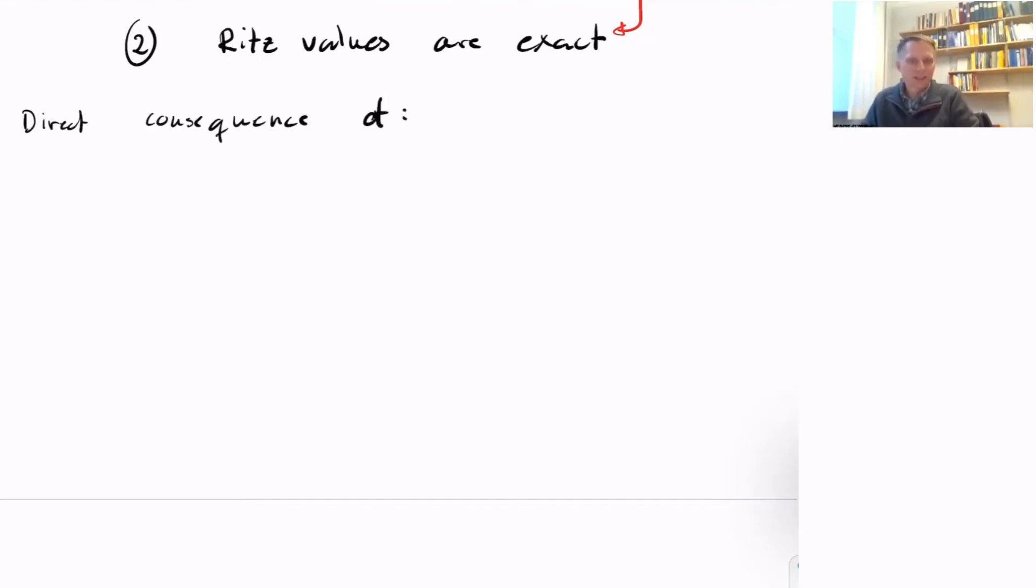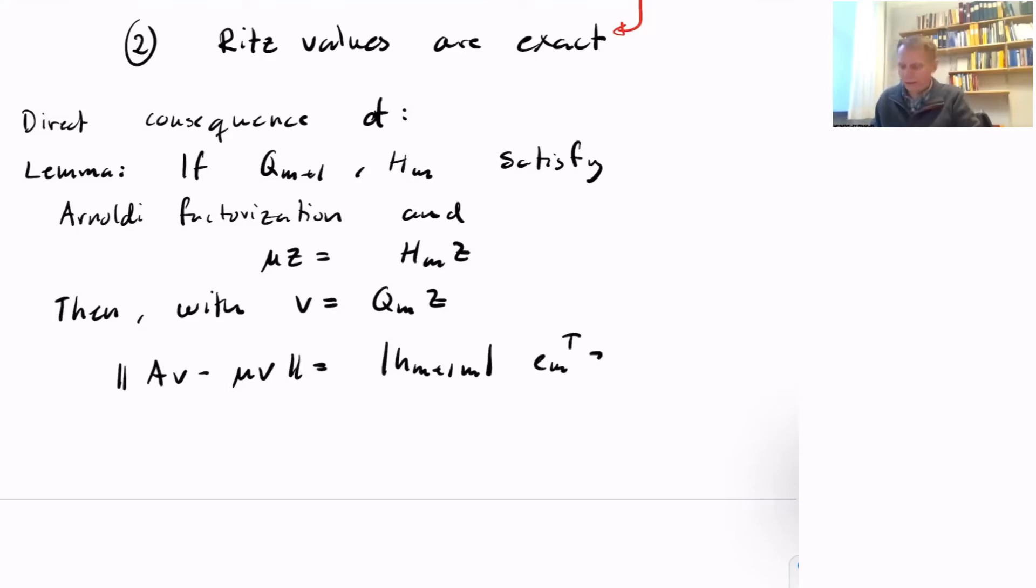This is a direct consequence of the following lemma. We start by assuming, as usual, that Q_M and H_M satisfy the Arnoldi factorization, and that mu and z form an eigenpair of the H_M matrix. As usual, we assume that V is the eigenvector approximation corresponding to the eigenvalue approximation mu, so we let V equal Q_M z, where z is the eigenvector of H_M.